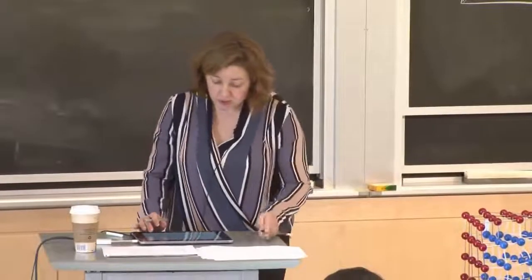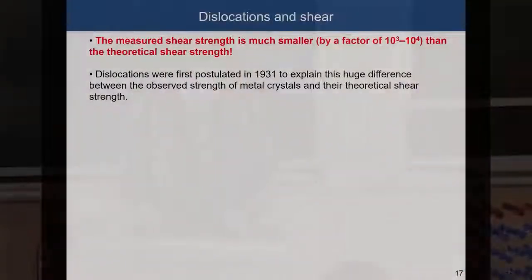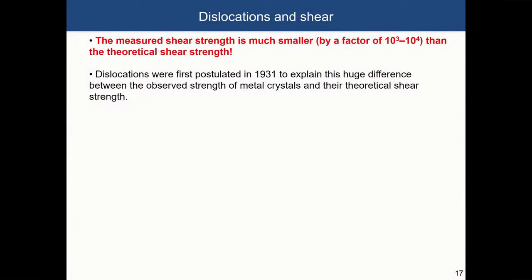There is a significant discrepancy between the theoretically calculated and the measured values. G is roughly on the order of gigapascals, and the theoretical critical stress is calculated to be G over 2π. But the experimental value is roughly equal to G over 1,000 or 10,000.